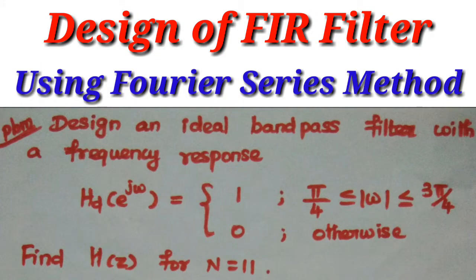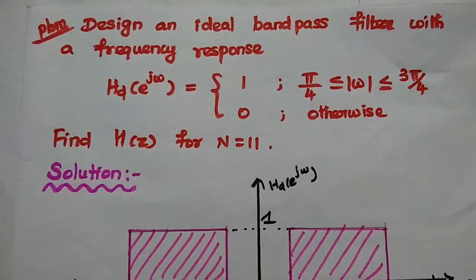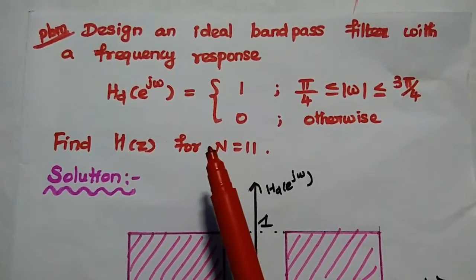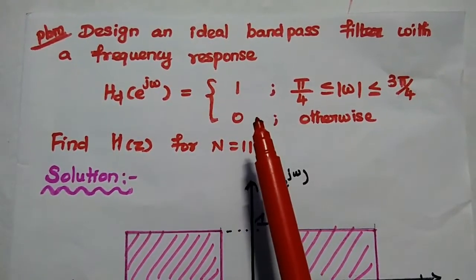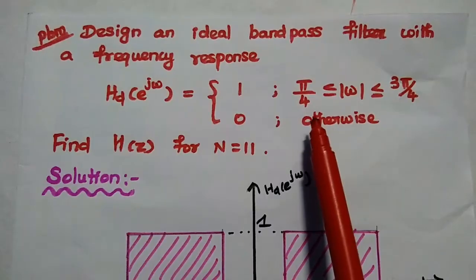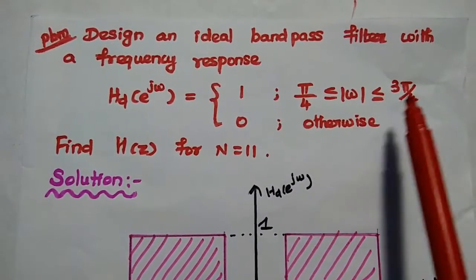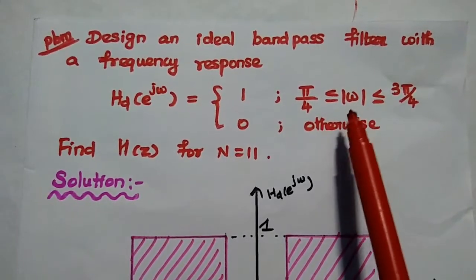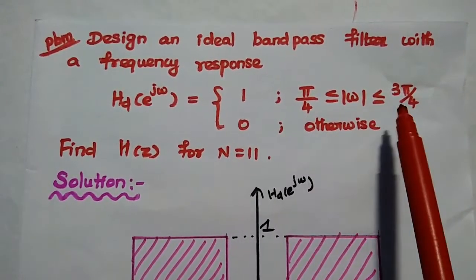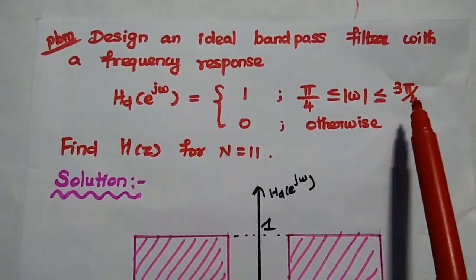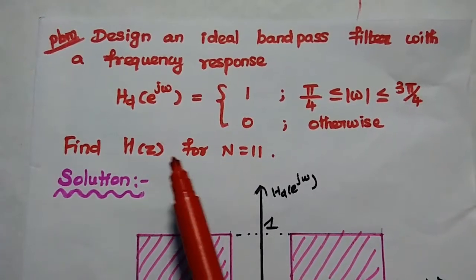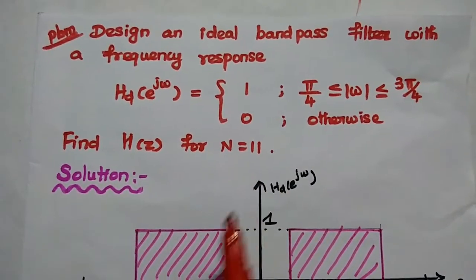Dear students, now we are going to design an ideal band pass FIR filter using the Fourier series method. Design an ideal band pass filter with a frequency response Hd(e^jω) equal to 1 when the frequency is between π/4 to 3π/4. This modulus sign represents the frequency response occurring on both the positive and negative side. Its value is 0 otherwise. Find H(z) for N equal to 11 samples.